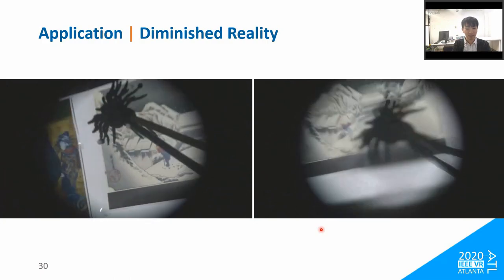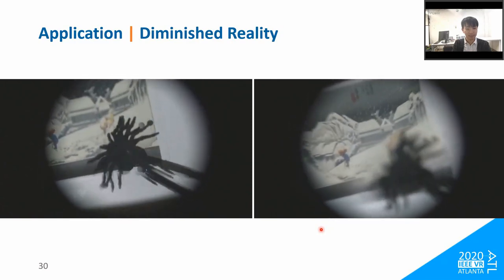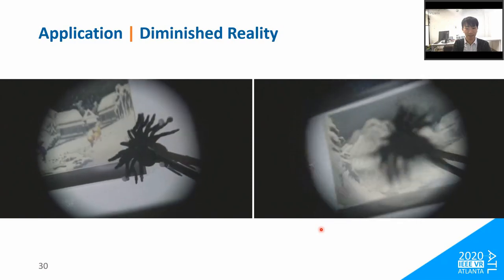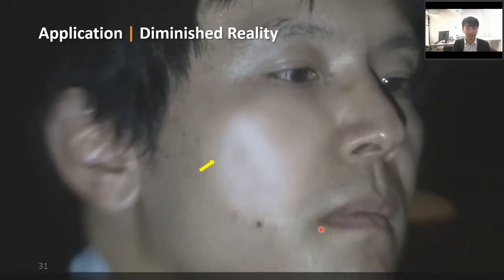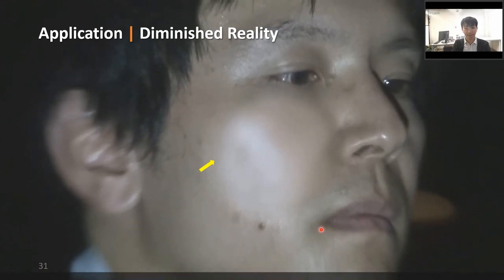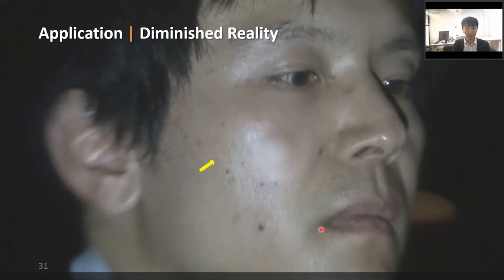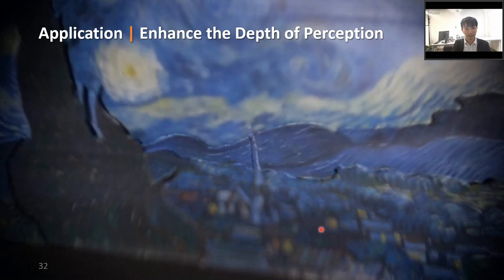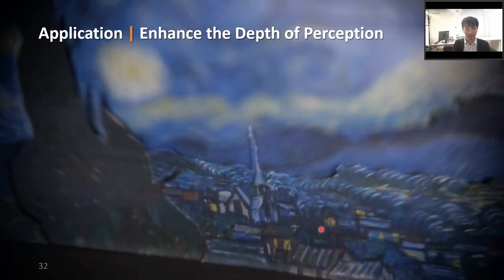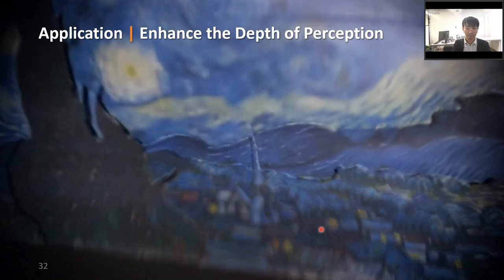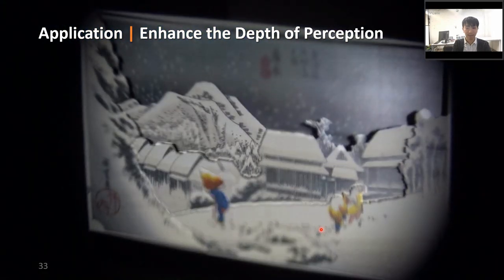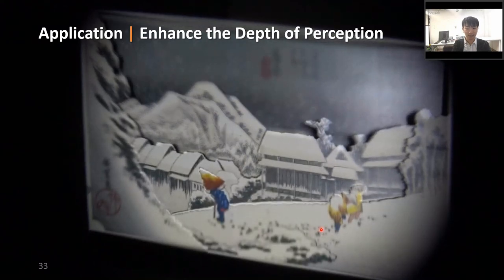The third application is concealing information — diminished reality. For example, it can be used to hide unpleasant objects such as insects. In another example, the system conceals undesirable signs of skin aging on a face, like blotches, pores, and wrinkles, by blurring them out. The last application is enhancing depth perception — a new vision augmentation for 2D pictures by making the background region appear blurred. We can perceive that the depth variation of the picture is enhanced by focusing and defocusing effects.